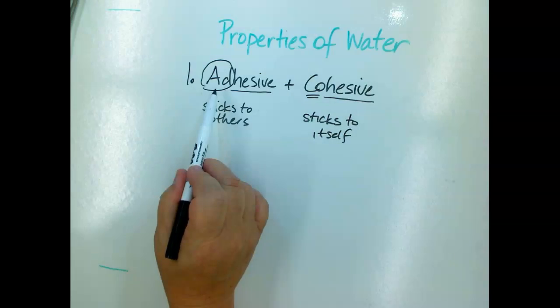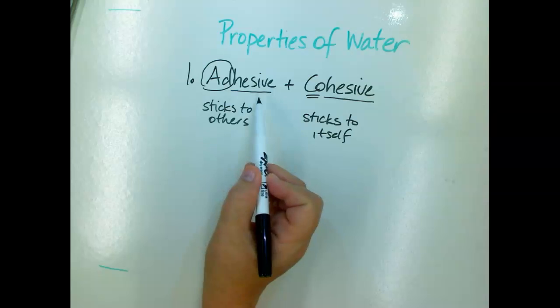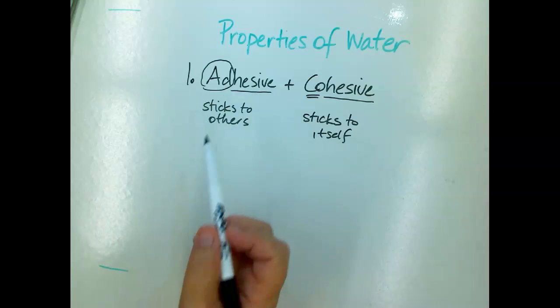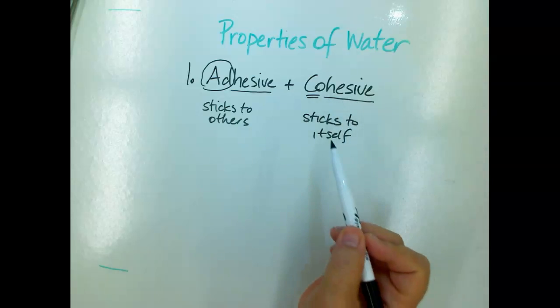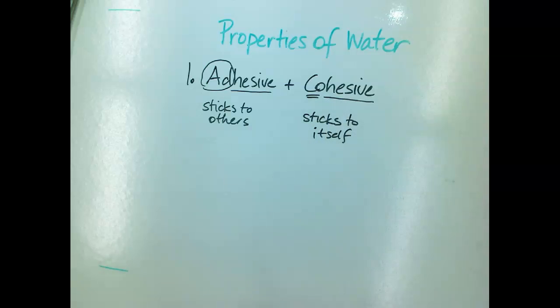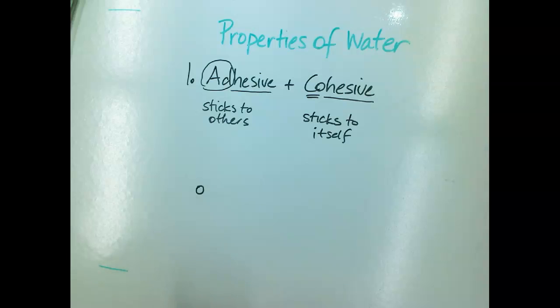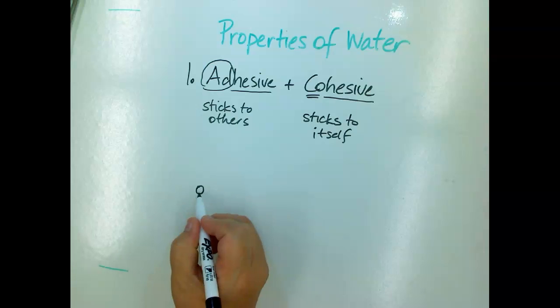If you look at a package of band-aids it says adhesive strips that means that they stick to your skin. Tape is an adhesive because it sticks to things. Glue is an adhesive and cohesive means things that stick to themselves and water is quite unique in that property. I'm just going to draw water as like a little ball. Every time you see me draw a little circle that's a molecule of water.